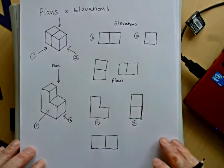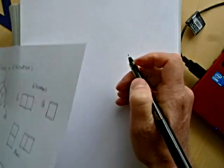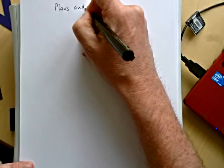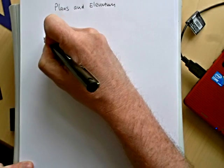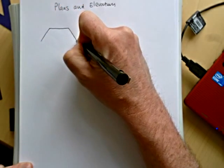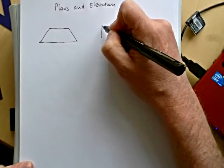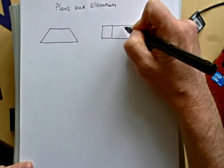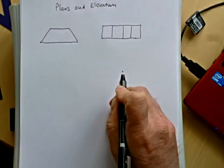Okay, so let's have a look at something a little bit more complicated. So, what if the one elevation was like that, and the plan was like that? And I'll ask you to draw the solid.